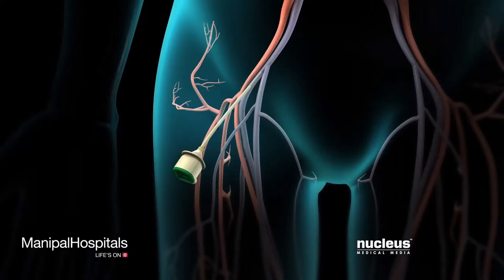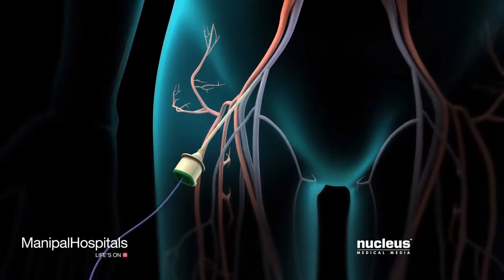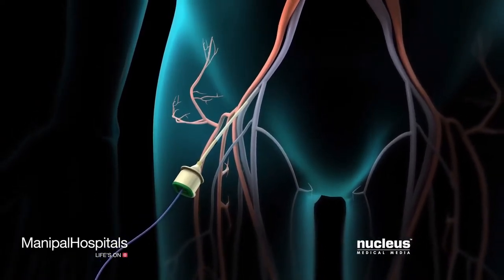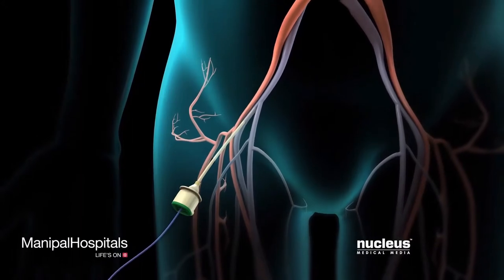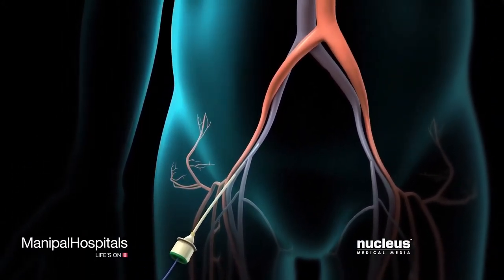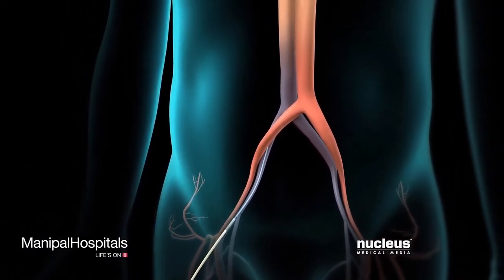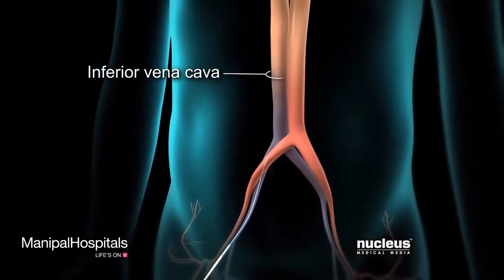Next, a long, flexible tube, called a catheter, will be inserted through the sheath. The doctor will guide the catheter to the heart through a blood vessel that goes to the heart, called the inferior vena cava.